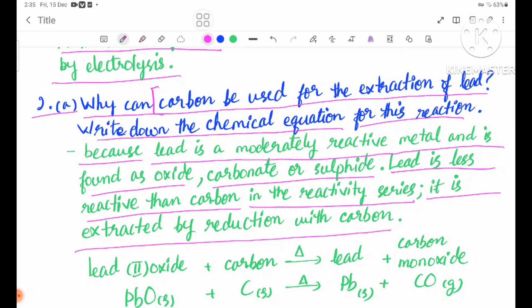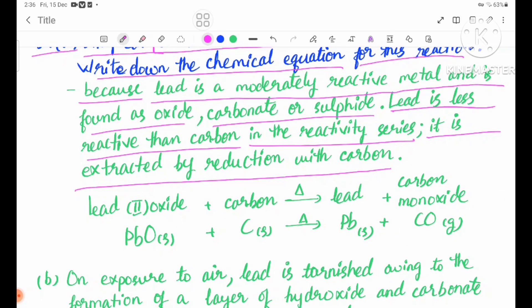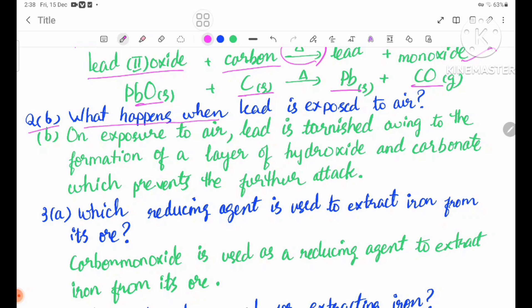The reduction equation: lead(II) oxide plus carbon solid, forming with heat, lead solid plus carbon monoxide gas. Number two B: What happens when lead is exposed to air?